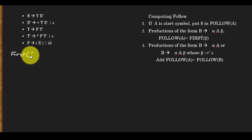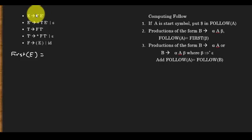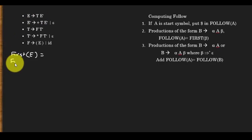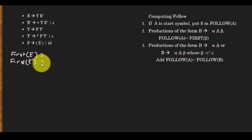The first of E is determined by the leftmost symbol on the right-hand side. Since the leftmost symbol is T, which is a variable itself, we'll come back to E later. For E', the leftmost symbol of one production is 'plus', so 'plus' is in the first of E'.